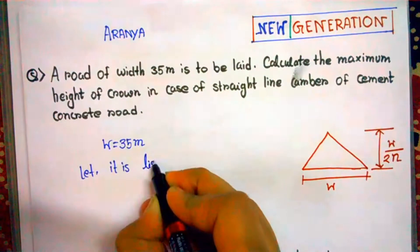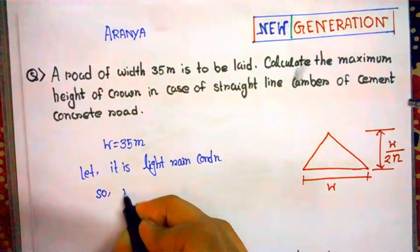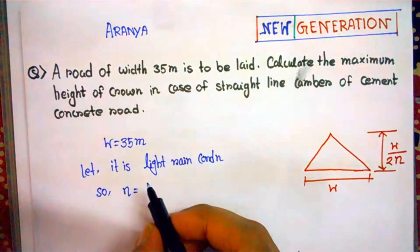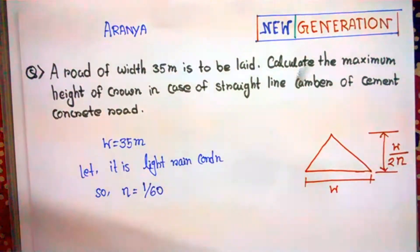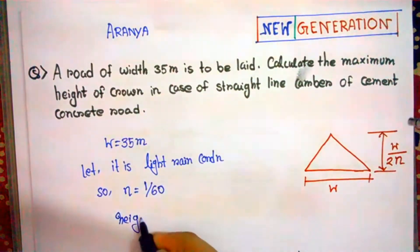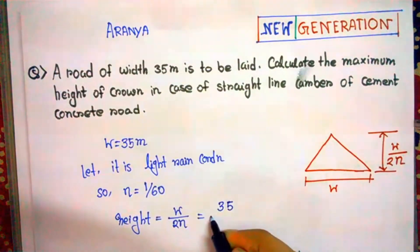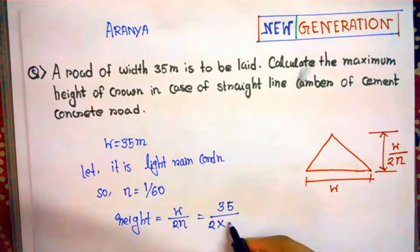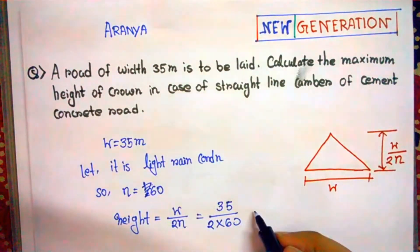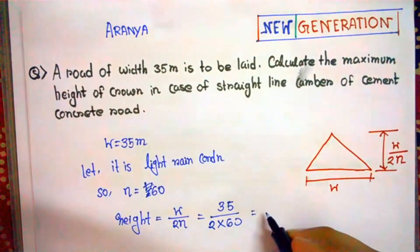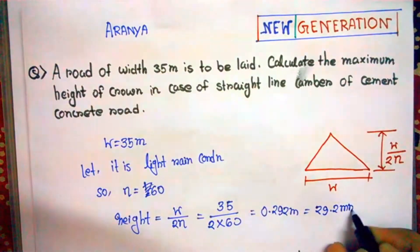They have not mentioned the condition, so let us assume it is light rain condition. So n should be equal to, as per the chart I had provided, n = 1/60. Now as per the formula, the height h = w / 2n, where w = 35 meters and n = 60. So h = 35 / (2 × 60) = 0.292 meters or 29.2 millimeters. This is your answer.